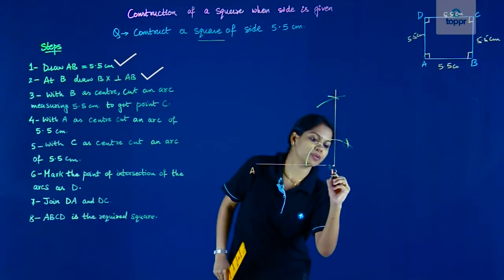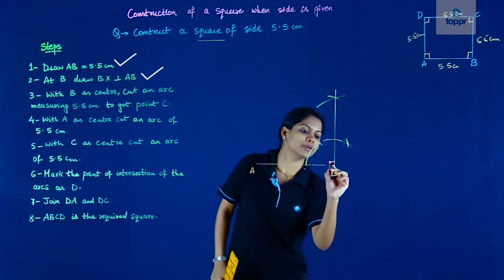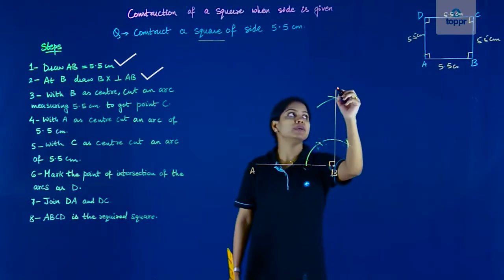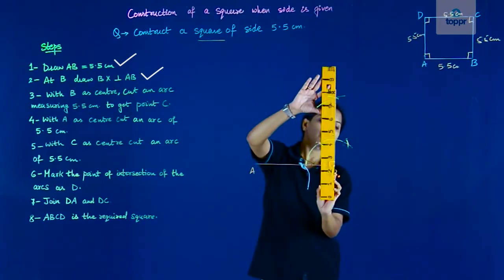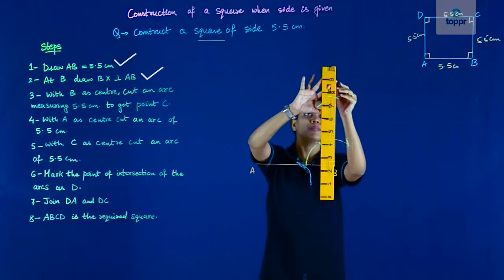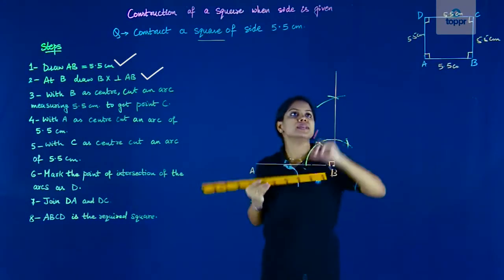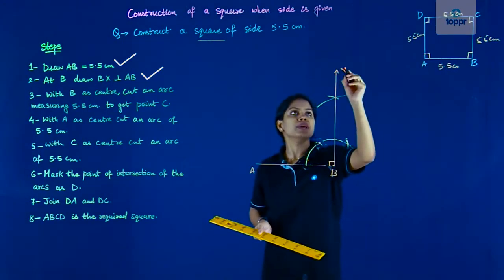So this is the, and this angle here is 90 constructed. Let me name this ray as, okay let me just, I don't know how much will 5.5 be. So I'll name this ray as ray BX. Okay.